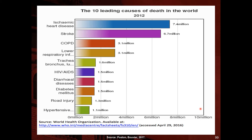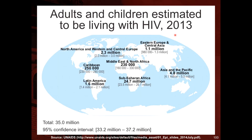The ten leading causes of death in the world in 2012 show ischemic heart disease and stroke at the highest levels. Stroke and heart diseases are the conditions killing the most people in more recent years.